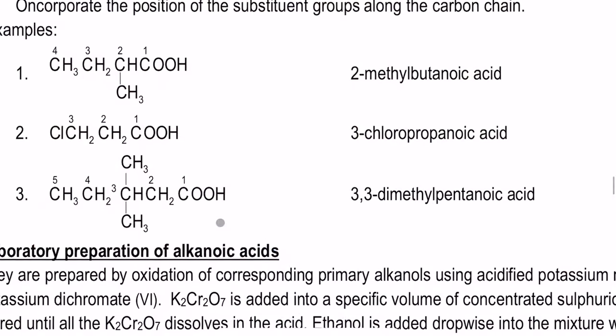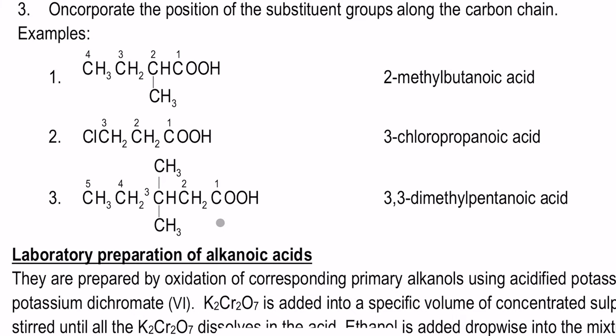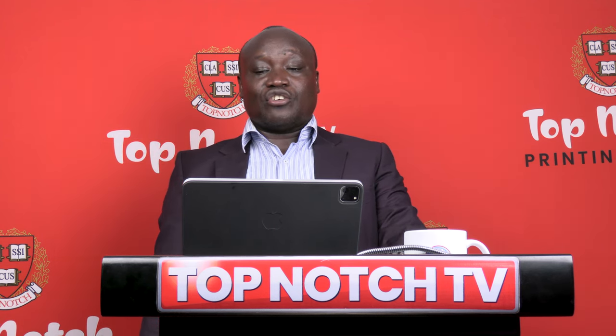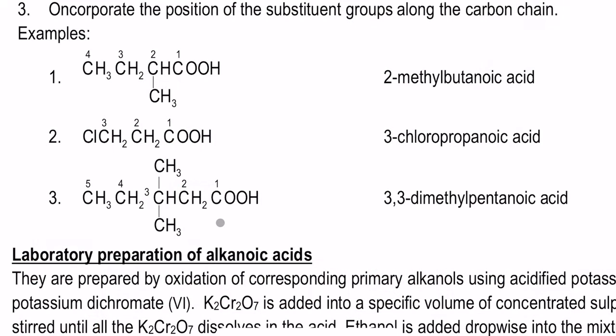I want to present three examples of such compounds and how they can be named. Look at the compound labeled number one. The parent chain has four carbon atoms and the carbon atoms are numbered from the right-hand side because that is where the COOH group is placed. There is a substituent group attached to the second carbon, called a methyl group because it has one carbon atom. The correct IUPAC name of that compound is 2-methylbutanoic acid.